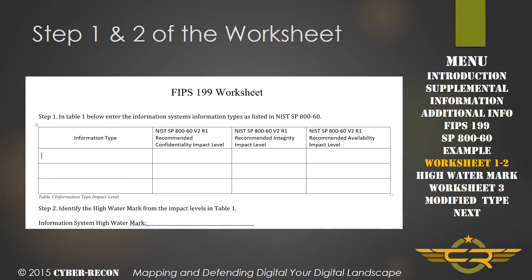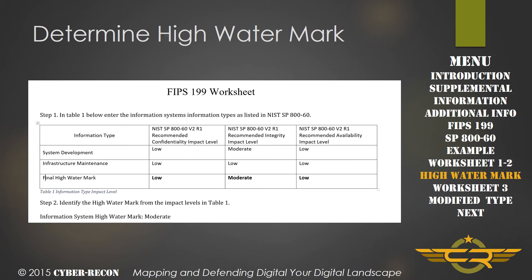This is an example of the FIPS 199 worksheet available on cyberrecon.com. The first two steps determine the high water mark based on the baseline information types. In a normal information system, you'll have many more information types than just the two we'll use in this example. We've selected two information types: system development, which we described earlier, and infrastructure maintenance, to get a well-rounded example. The system development information type has an impact level of low, moderate, low, and the infrastructure maintenance type has a confidentiality impact level of low, an integrity impact level of low, and an availability impact level of low.